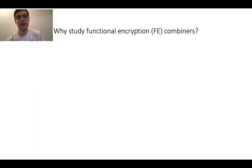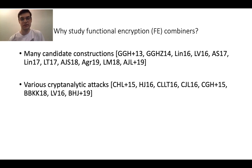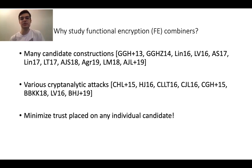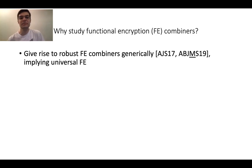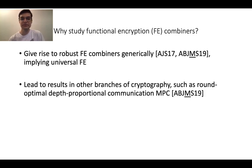Why should we study functional encryption combiners? There are many candidate constructions of functional encryption, and also various cryptanalytic attacks. Thus, we would like to minimize the trust placed on any individual candidate, which is exactly what cryptographic combiners allow us to do. Furthermore, FE combiners give rise to robust functional encryption combiners — combiners that don't even require the underlying candidates to be correct — and this implies universal functional encryption, which is an FE candidate that is secure if functional encryption exists. Studying FE combiners also leads to results in other areas, such as round-optimal depth-proportional-communication MPC.